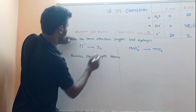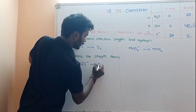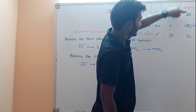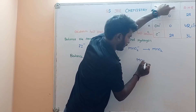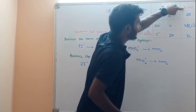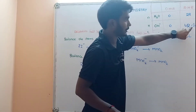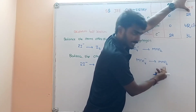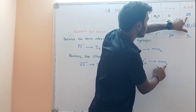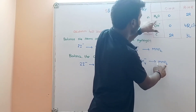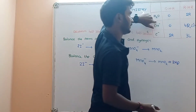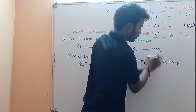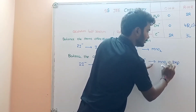Oxidation half reaction is zero. 2I minus gives rise to I2 — no change. Next, reduction of reaction oxygen balance: MnO4 minus gives rise to MnO2. The reduction of reaction — R is right, L is left. So right side: 2H2O. Balance the oxygen atoms on the right side.